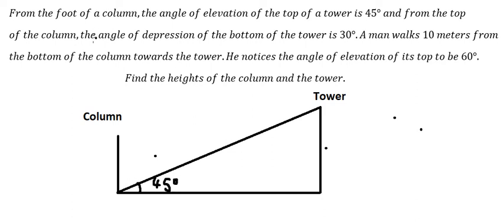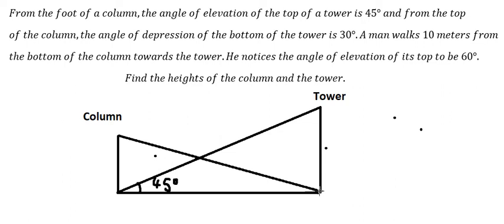On the next one, the angle of depression from the top of the column to the bottom of the tower — so this one goes to here. The angle of depression here is about 30 degrees.